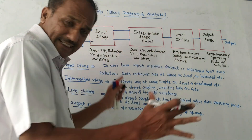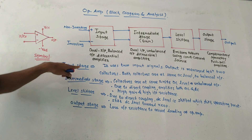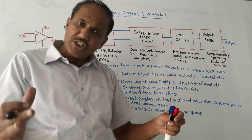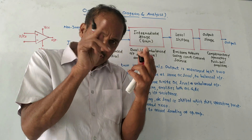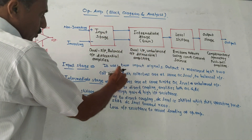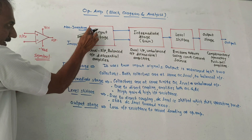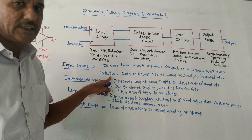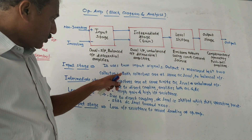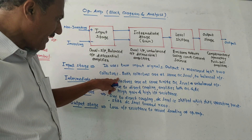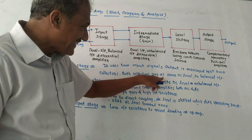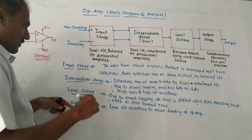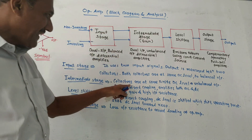Your answer must include these parts. The input stage is a dual input balanced output differential amplifier. As the name indicates, it amplifies the difference of two input signals. It uses two input signals — one is non-inverting, connected to the positive terminal, and another is inverting, connected to the negative terminal. Output is measured between two collectors of the two transistors, and both collectors are at the same DC level, so it is called balanced output.